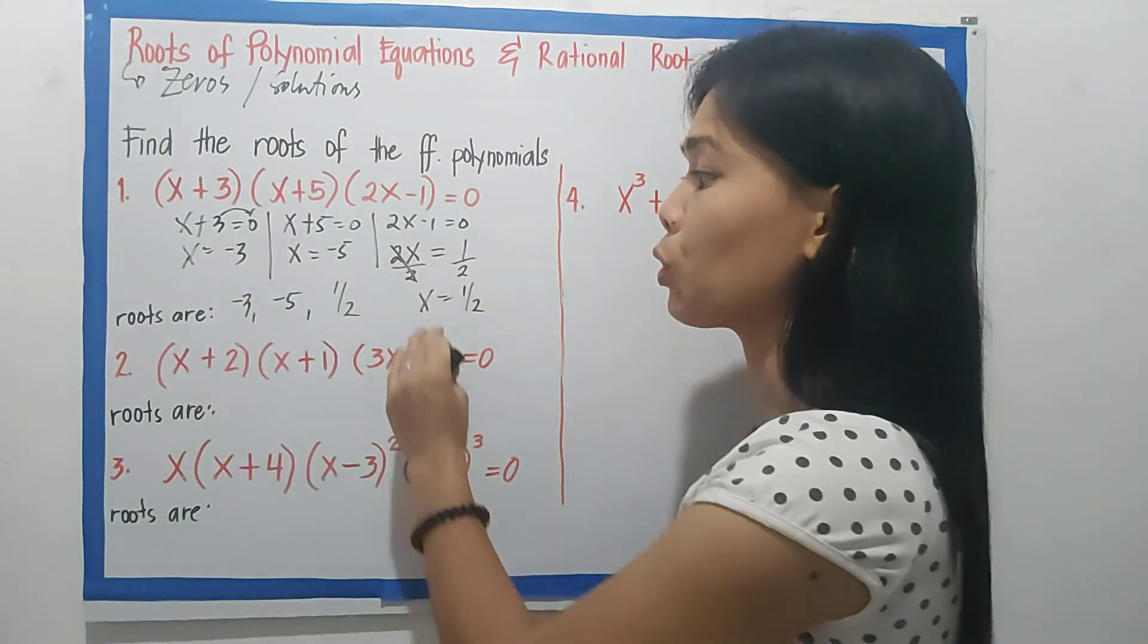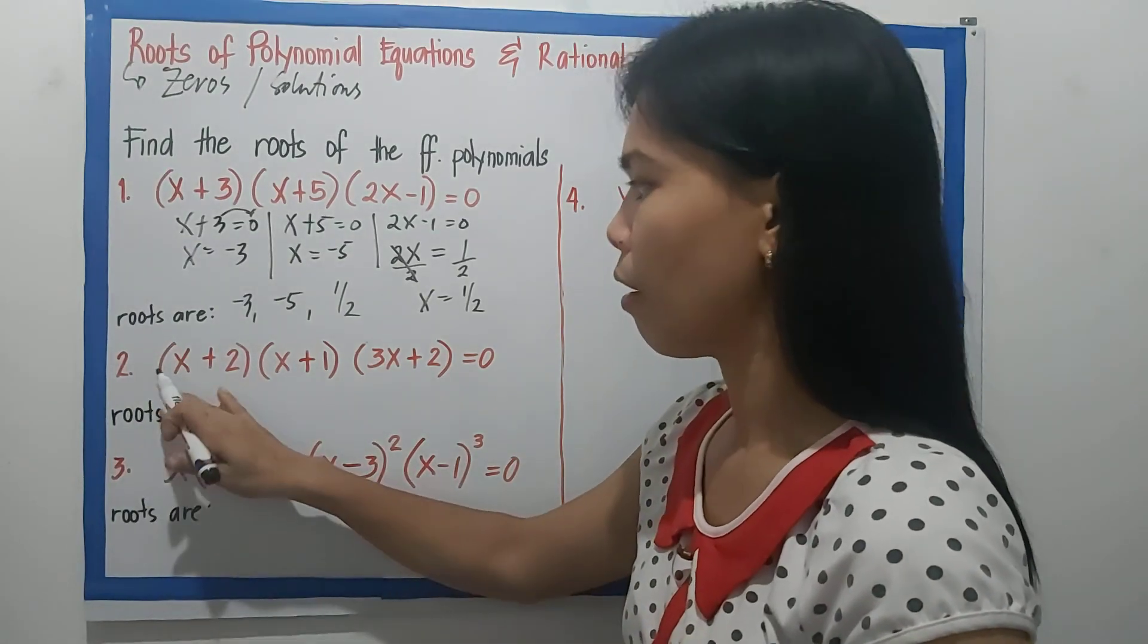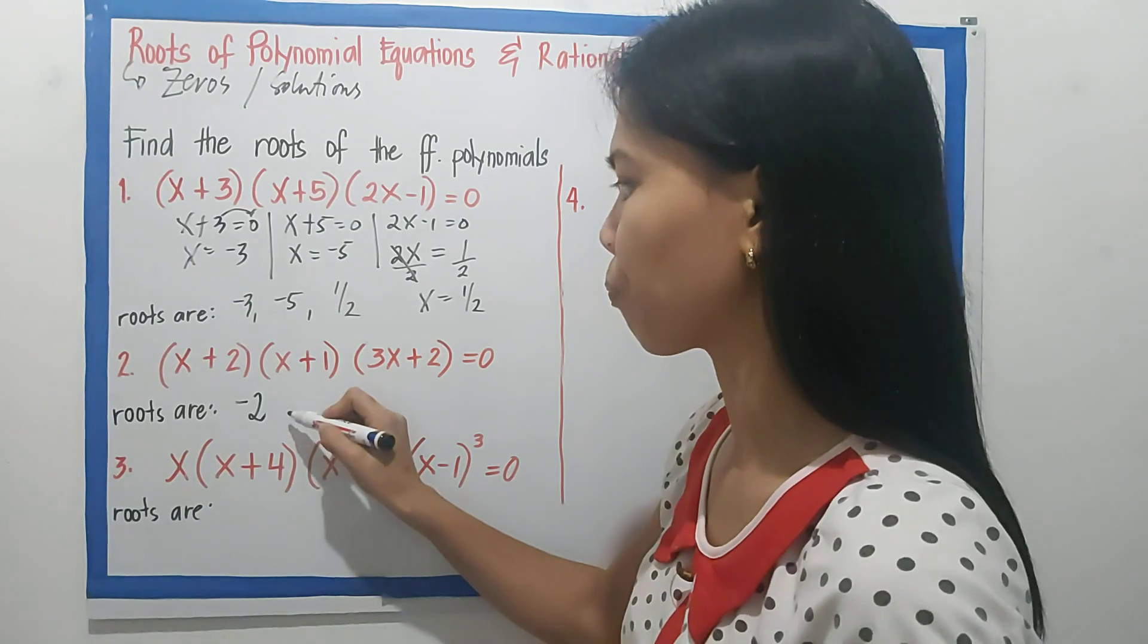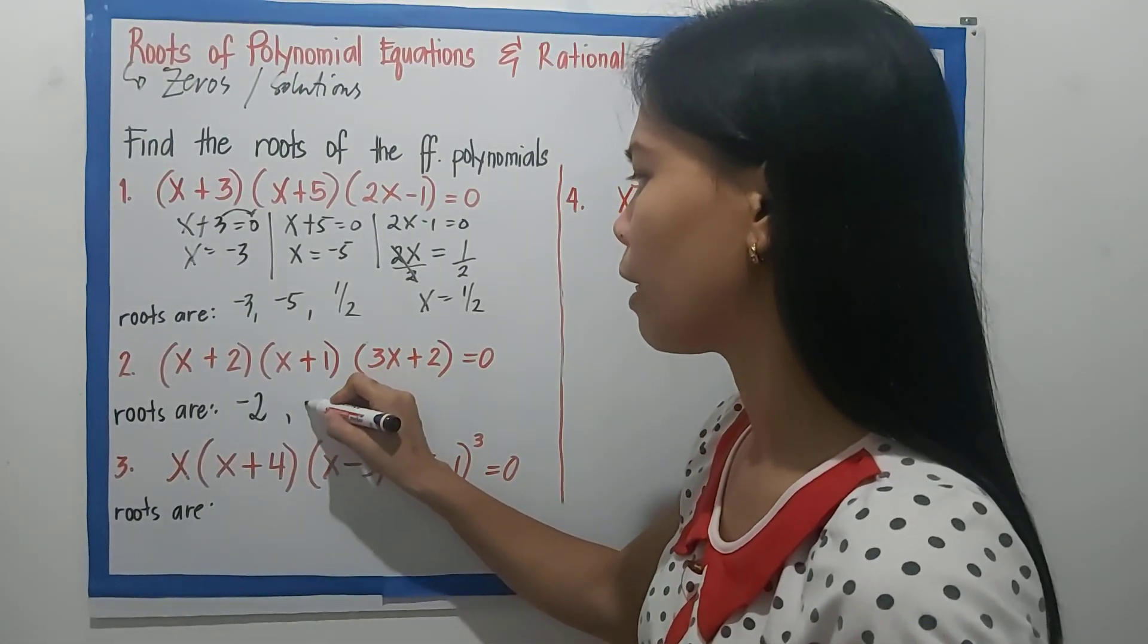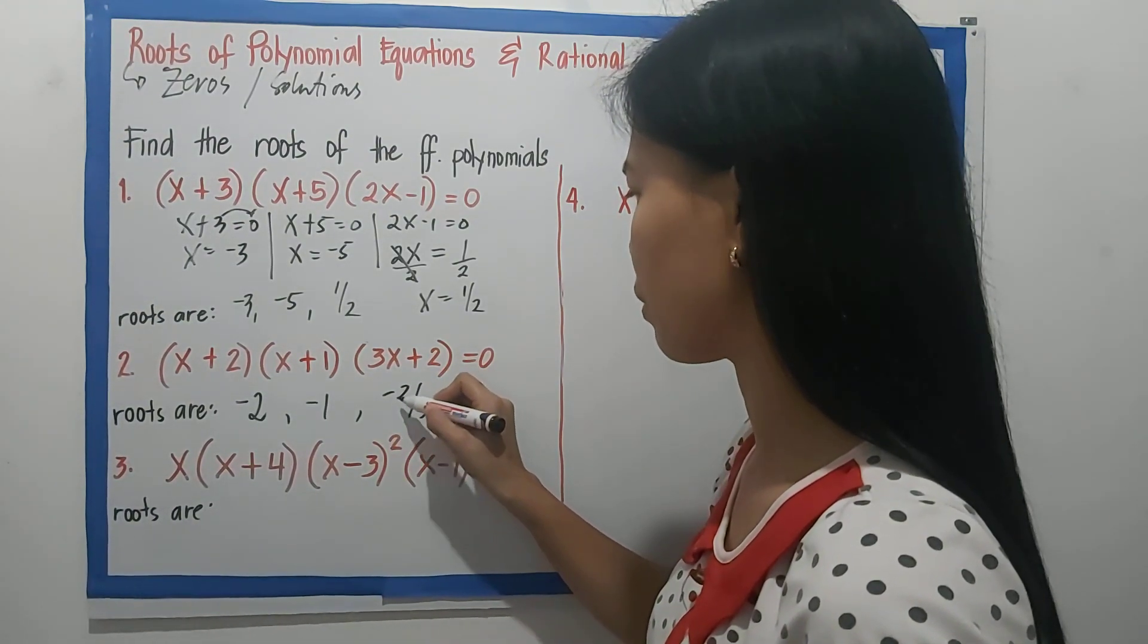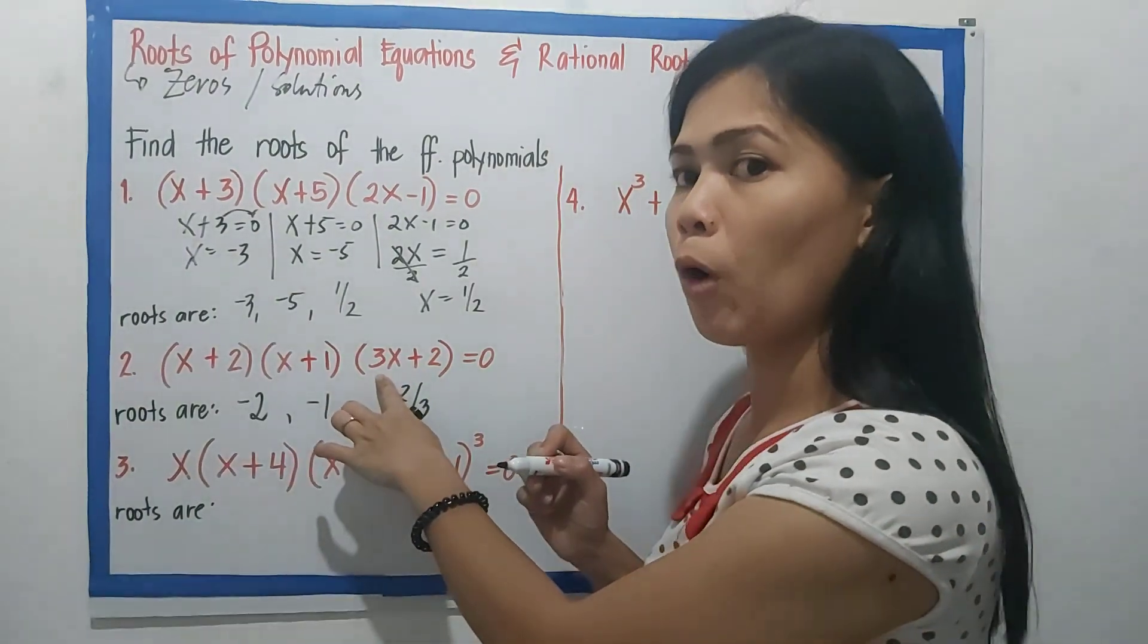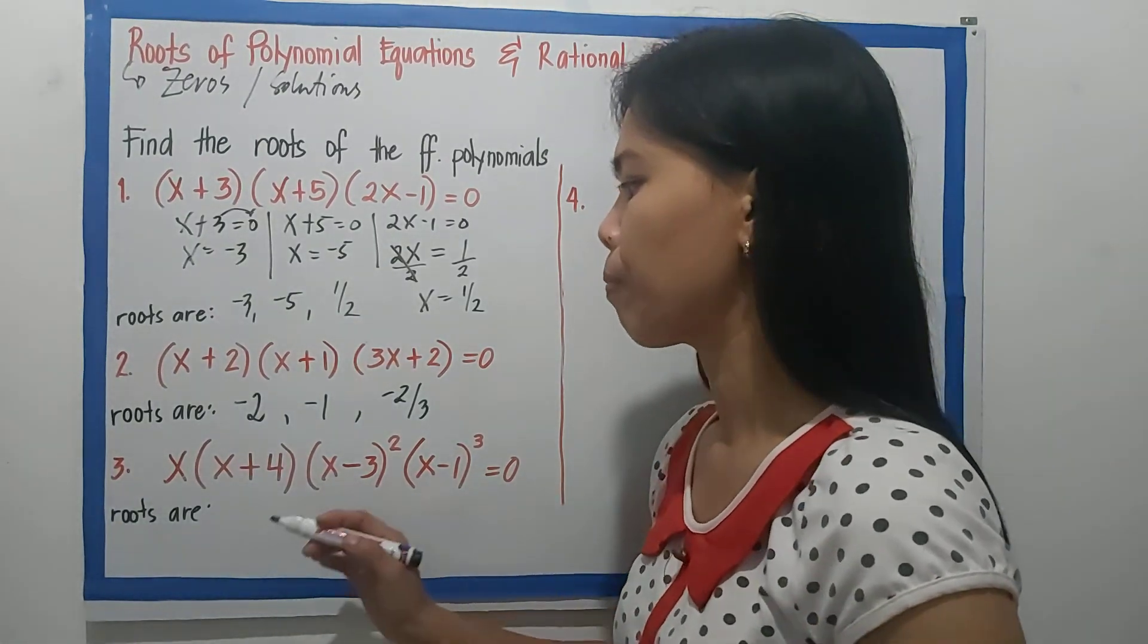For the next examples, we don't need to show the full solution because we already have the pattern. So roots are, for x+2, the root there is -2. And for the other one, x+1, that is -1. And we have here -2/3. The coefficient of x became the denominator in 2/3.